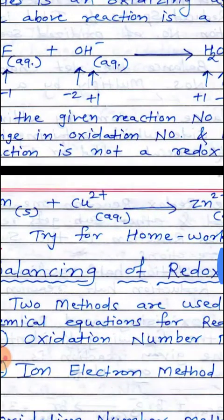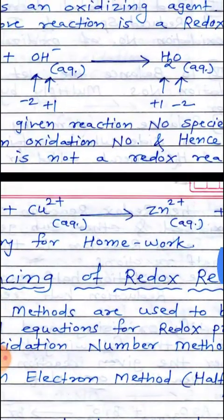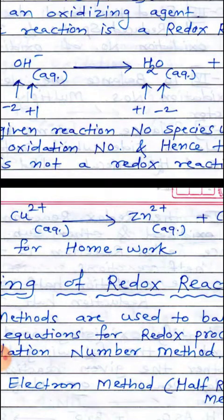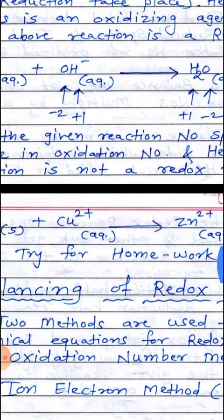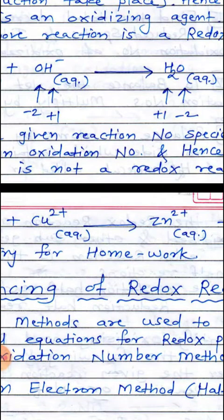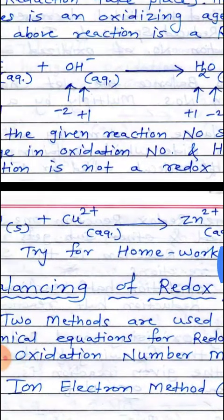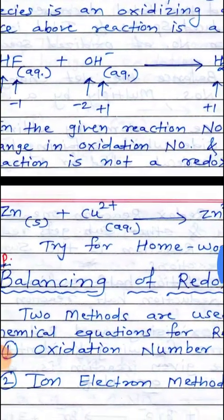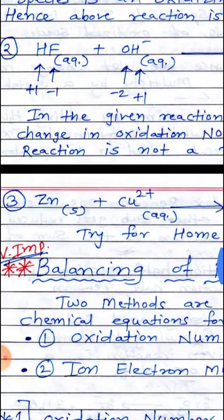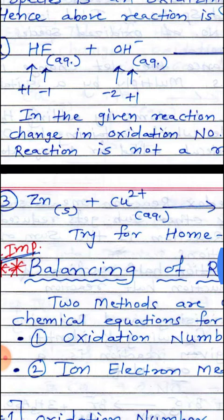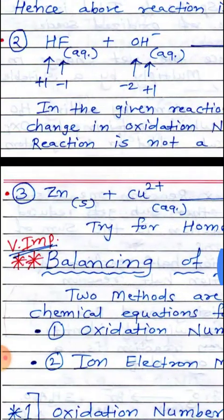Hence, in the given reaction no species undergoes a change in oxidation number. This reaction is not a redox reaction. There is no involvement of oxidizing and reducing agents; hence this reaction is not an example of a redox reaction.